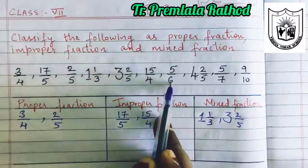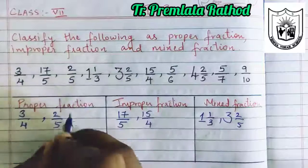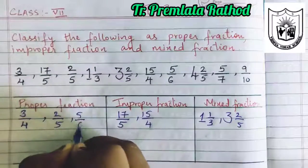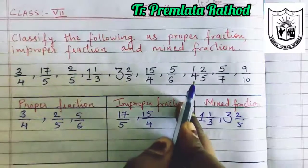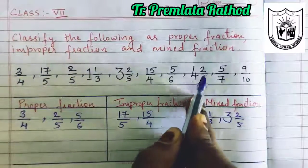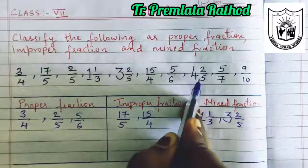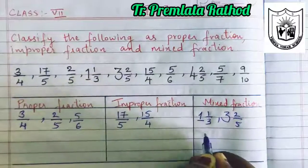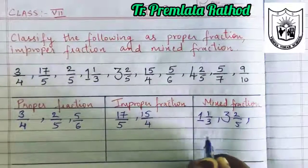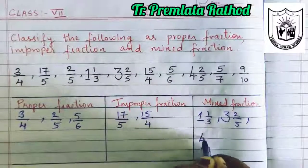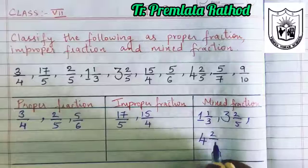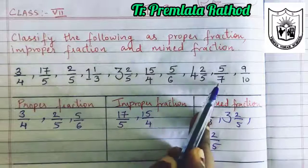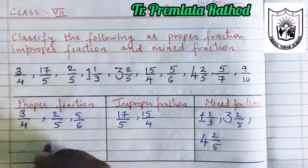This is small and this is big, so this will go under proper fraction. This is a combination of a whole number and a proper fraction, so this will go under mixed fraction. 5 by 7 is a proper fraction.